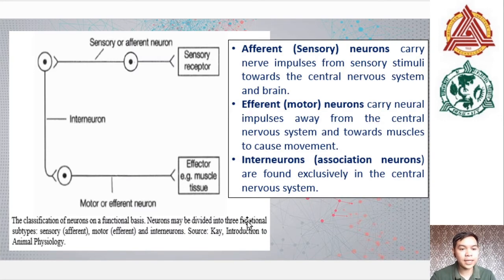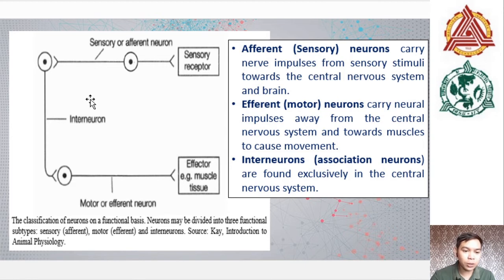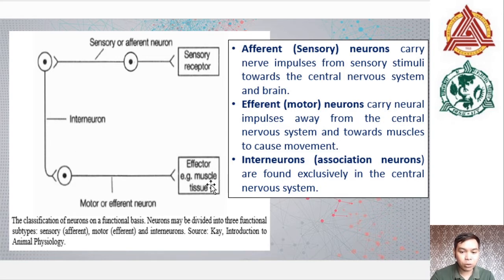Neurons can also be divided into three functional classes. Sensory neurons are connected to sensory receptors and transmit information perceived by the senses to the central nervous system. Interneurons, located within the central nervous system, are the central nodes of neural circuits enabling communication between sensory or motor neurons and the central nervous system. Motor or efferent neurons carry information from the central nervous system to the effector organs to elicit a response from the stimuli processed by the central nervous system.